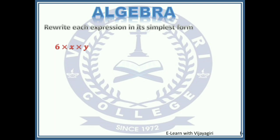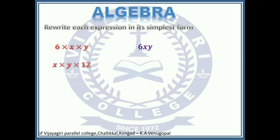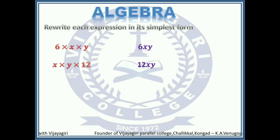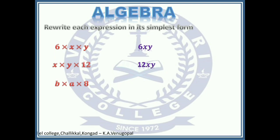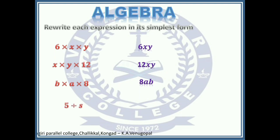Let's write each expression in its simplest form. '6 times x times y' — we don't use the multiplication sign in simplest form, so it is written as 6xy. 'x times y times 12' — the number 12 comes last here, but in simplest form the number goes first, so it is 12xy. 'b times a times 8' — the number goes first and we follow alphabetical order, so it is 8ab. '5 divided by s' — in division that rule is not applicable, so we write it as 5 by s.